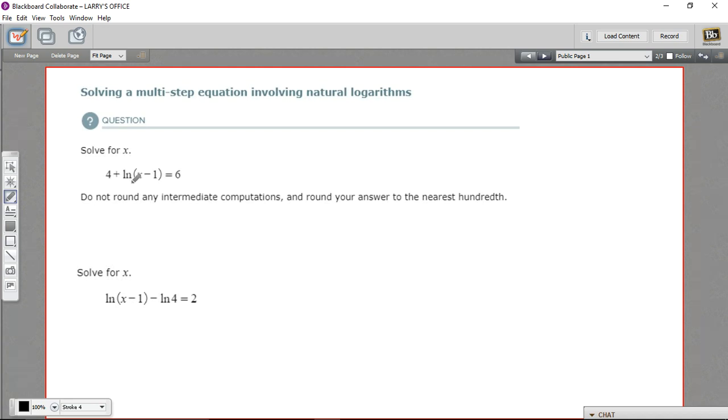In this problem we have 4 plus the natural log of x minus 1 equals 6. And the first thing we want to do is get the log alone, so we want this part just isolated on one side of the equal sign. And that's pretty easy to do here, we just need to subtract 4 from both sides. So that's going to give us the natural log of x minus 1 equals 2.